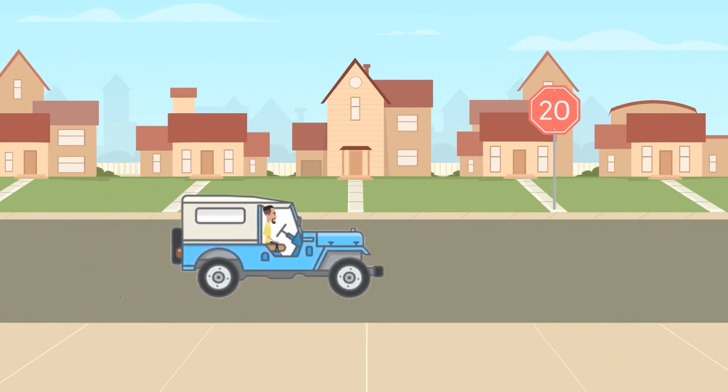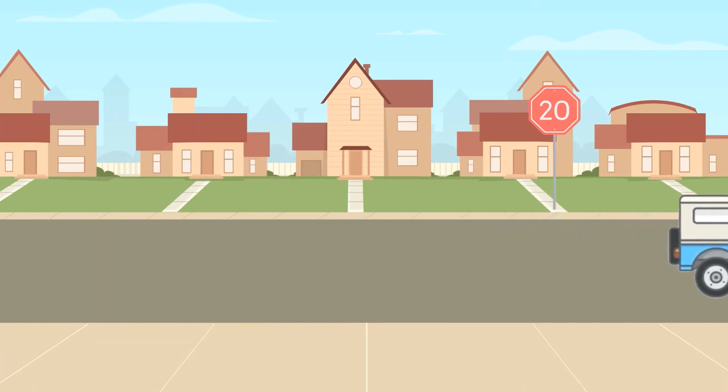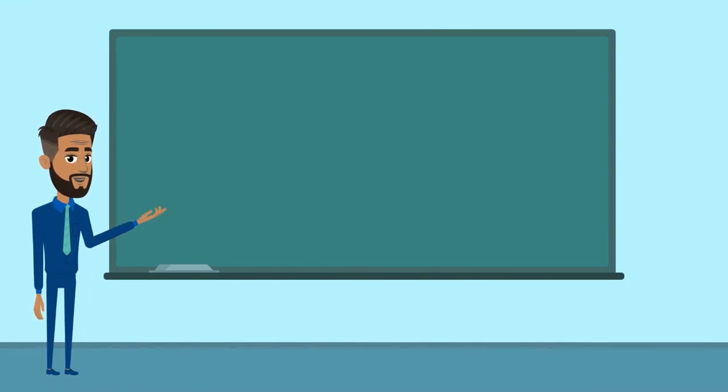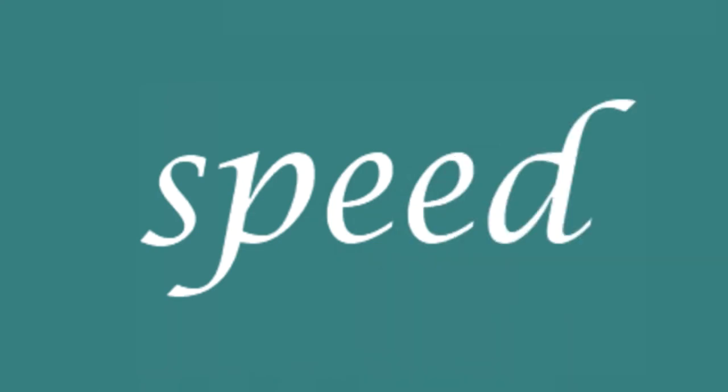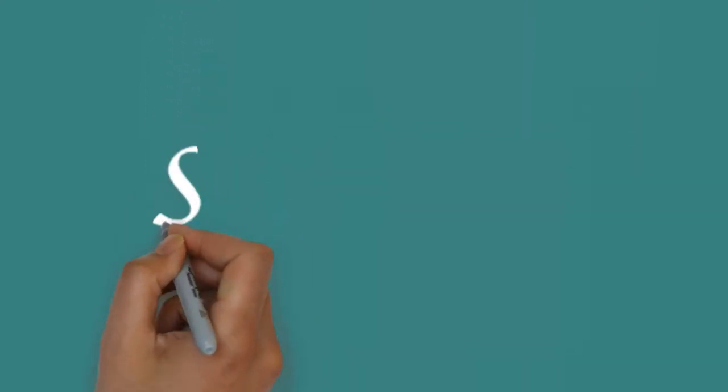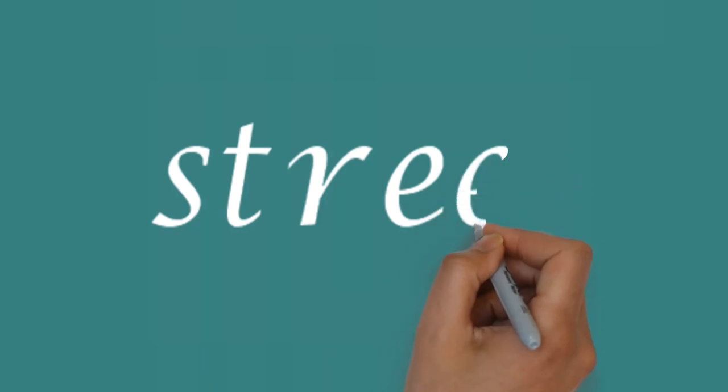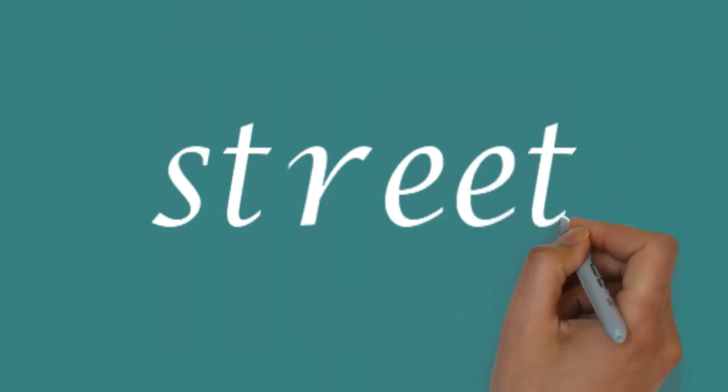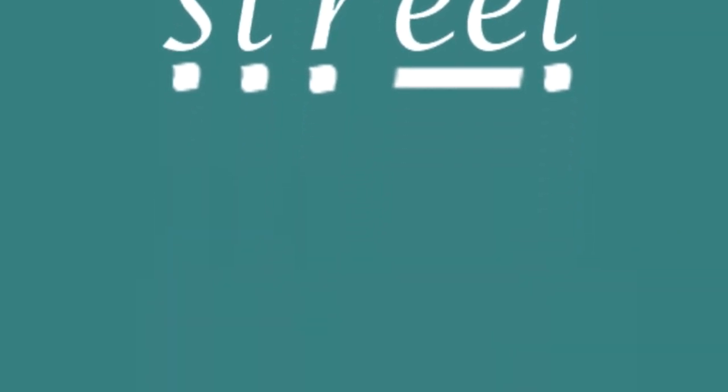And last but not least we find a jeep. It is in a street so it has to drive at a low speed. Now what were our two words? We had street and speed. Starting with street: s t r e e and t, s t r e e t, street. And finally let's try speed.